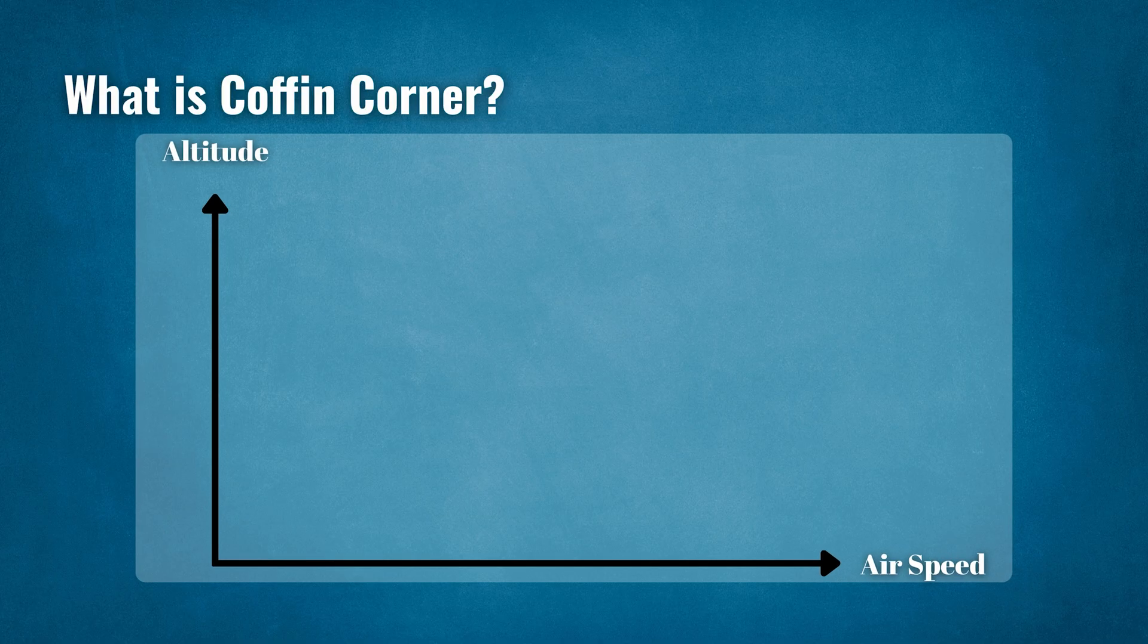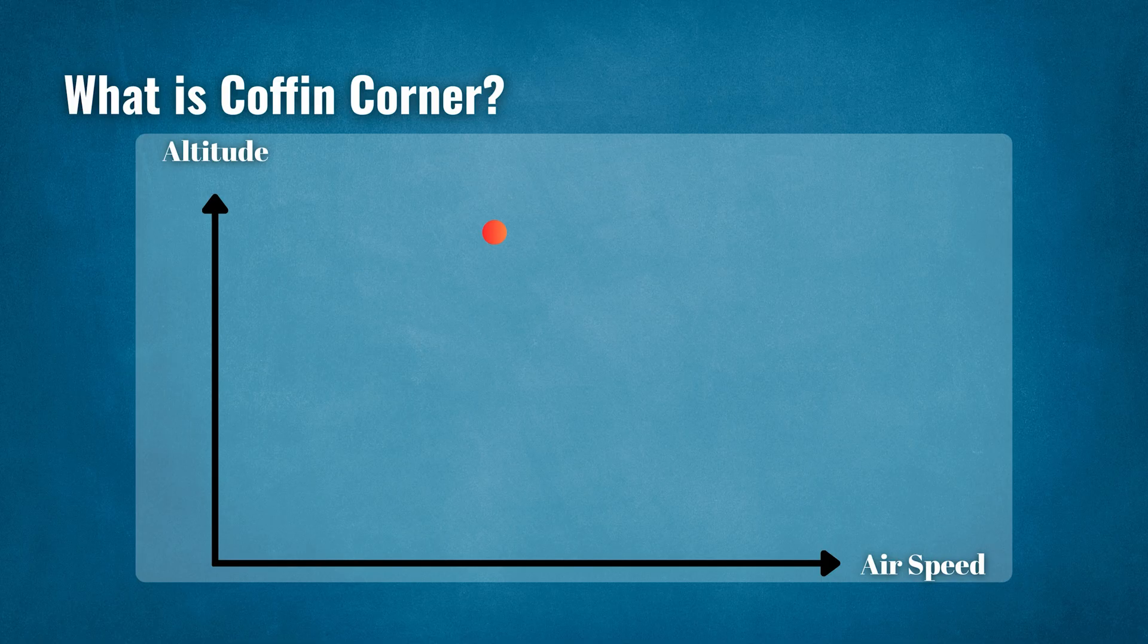What is coffin corner? The coffin corner is a point in the flight envelope where the low speed stall and critical Mach number lines intersect.